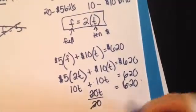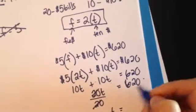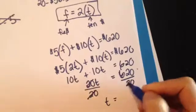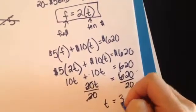20 divided by 20 is 1. So, I'm left with T, but whatever I do to one side, I have to do to the other. And, $620 divided by 20 is 31.